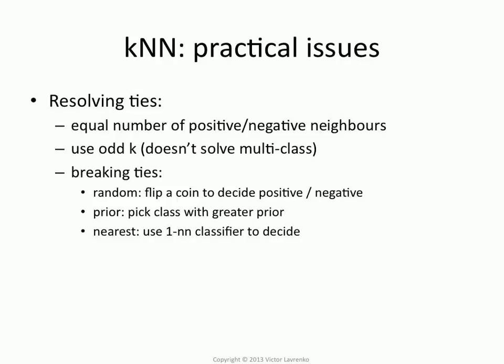Let's talk about some practical issues. When you do nearest neighbors, you will sometimes get ties. The ties occur when you've computed your neighborhood and in that neighborhood you happen to have an equal number of positives and negatives. If you only have two classes, you could just use an odd number of neighbors and this would never happen, but if you have more than two classes, then this will happen.